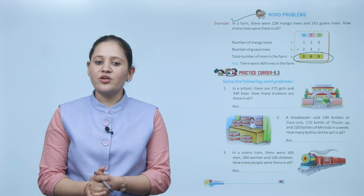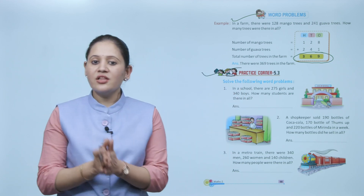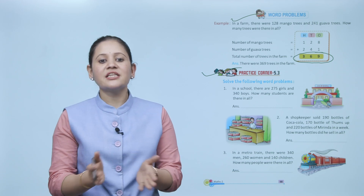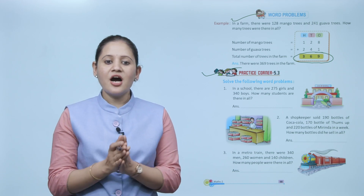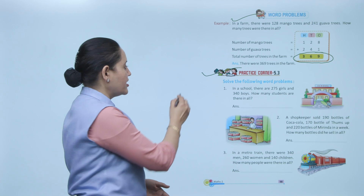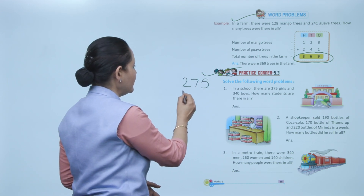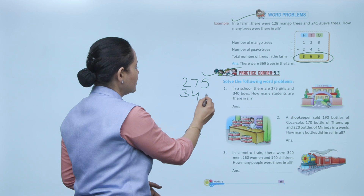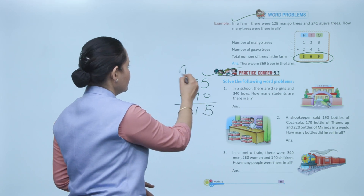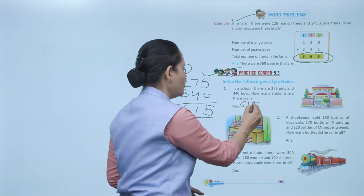Practice corner 5.3 — solve the following word problem. In a school there are 275 girls and 340 boys. How many students are there in all? We add the number of girls (275) and the number of boys (340). Total: 615 students in all.